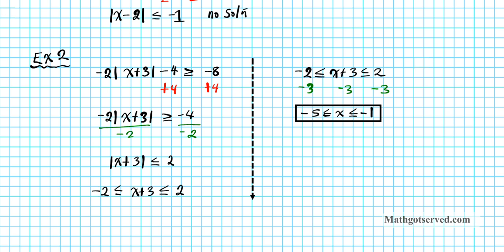Now let's graph this. I'll draw a number line going from negative 5 to negative 1 and beyond. The endpoints are included — we know this because of the less than or equal to sign, which indicates that the boundary points are included in the solution region, along with everything in between. So that is the graph of the solution.